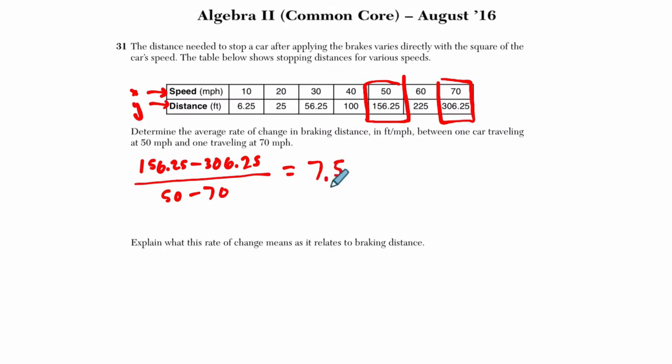Right, so you have 7.5, and you don't need to include the units, but let's just do that here. It's going to be feet divided by what? The difference in the x is miles per hour. So I'm going to put that there. These units can be canceled out, but I'm going to leave it like that. It's 7.5 feet for every one mile per hour, and I'm going to do that because it helps me explain the answer here.